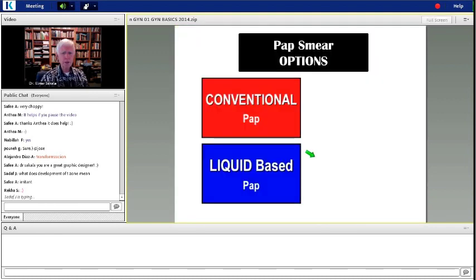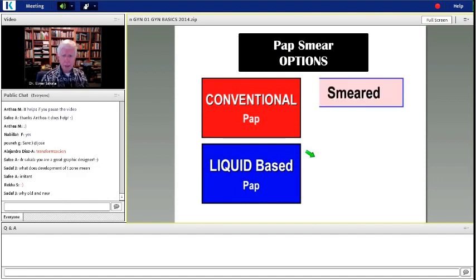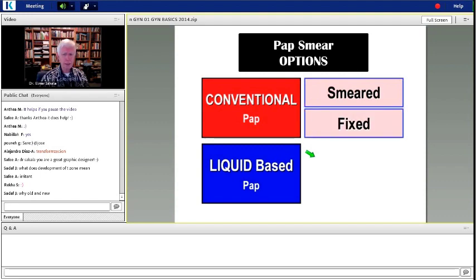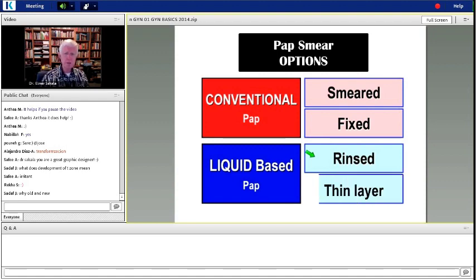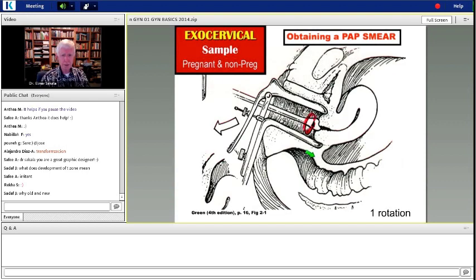We already talked about two specimens, endocervical and exocervical. The conventional pap smear takes the cells and smears them onto a glass slide. Then you take the glass slide and you put some alcohol on it, or you spray it with hairspray. You fix it. The liquid-based pap is a new one, which you should be aware of. This does not smear the cells. You rinse the cells into a fluid medium. The cells are then precipitated in a hopefully thin layer on the glass slide, and that's how they are seen. And there are many advantages, theoretically, to this.